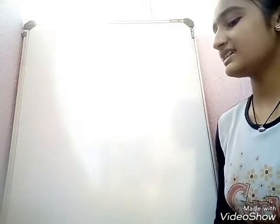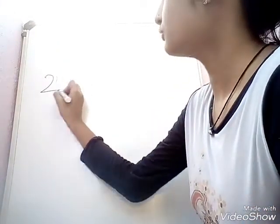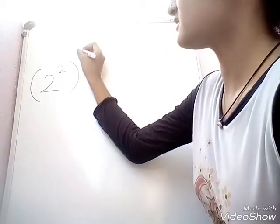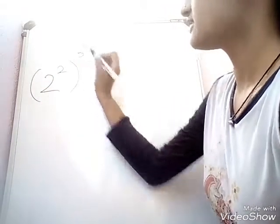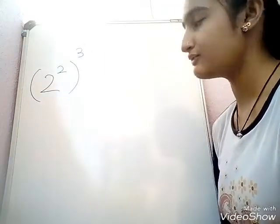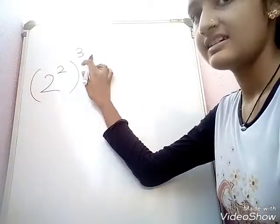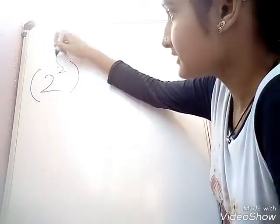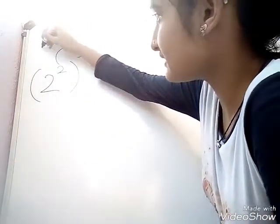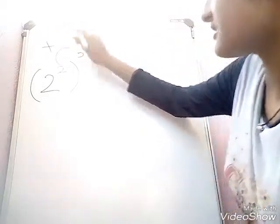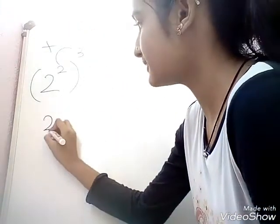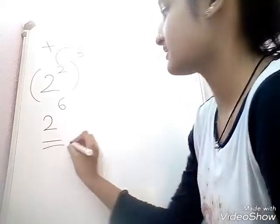Now let's take an example: 2 power 2, outside the bracket 3. The answer will be 2 power 6. If there is a bracket, we multiply directly these 2 and 3's, which are 6. Then our answer will be 2 power 6.